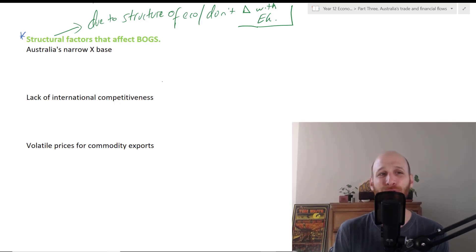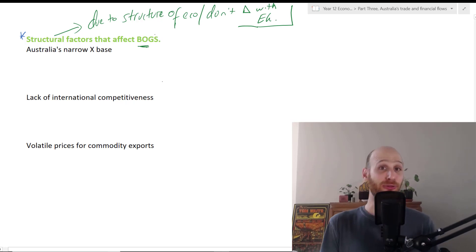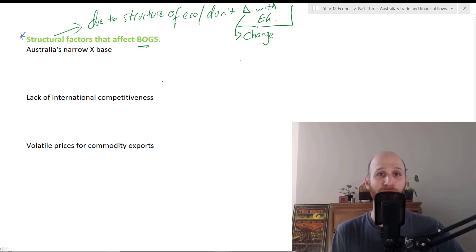Okay, now we move to the structural factors that affect the balance of goods and services. Remember that structural factors are due to the structure or nature of the individual economy. They don't change with economic growth. This triangle is a Delta, a Greek letter, that symbolizes change. So structural factors don't change when economic growth changes. They're always going to be present because of how the economy operates.